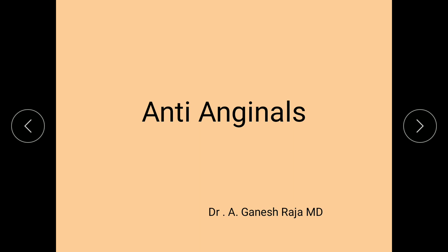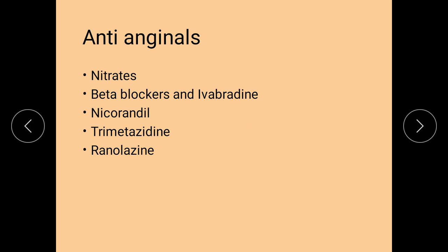A short note on the anti-anginals. The following are the group of drugs commonly used as anti-anginals. Nitrates are the most common group. Isosorbide dinitrate gives symptomatic relief from chest pain due to angina. Other groups include beta blockers and ivabradine. Rate-limiting calcium channel blockers such as verapamil and diltiazem can also be used, as they cause bradycardia and decrease energy consumption. Other drugs include nicorandil, trimetazidine, and ranolazine.